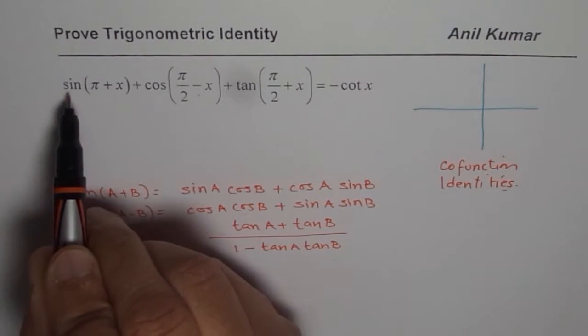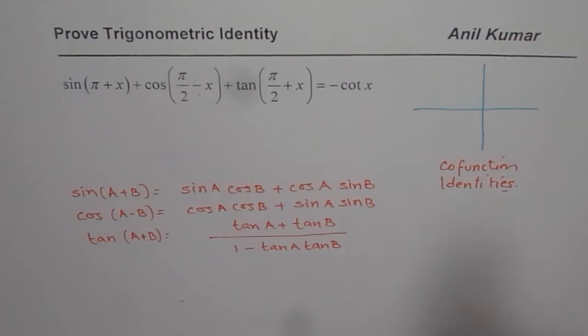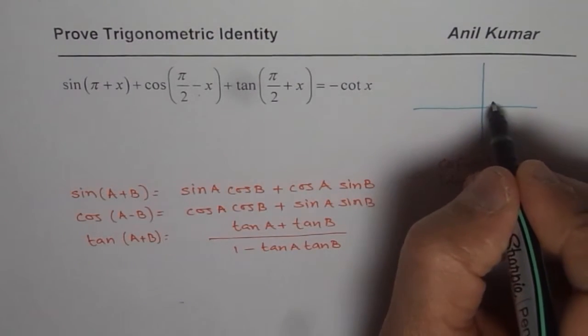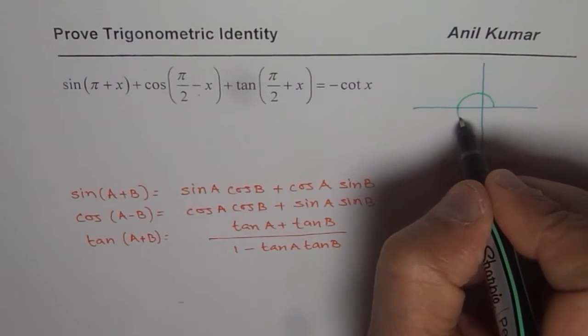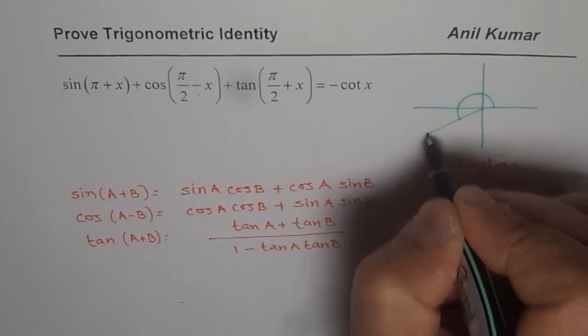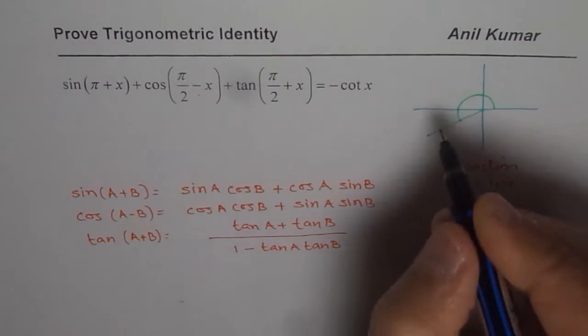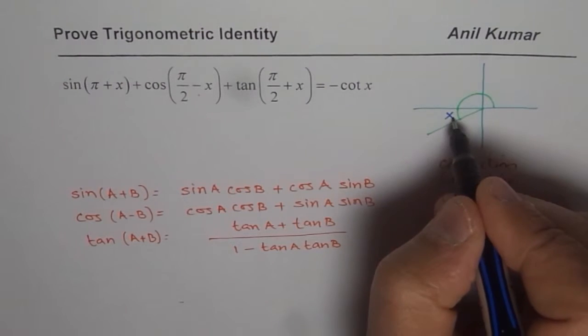First one is sine of pi plus x. So, sine pi plus x means what? We are looking for an angle which is in quadrant pi plus x. That means it is in quadrant 3. Where the angle x is this angle. So, that is the acute angle.